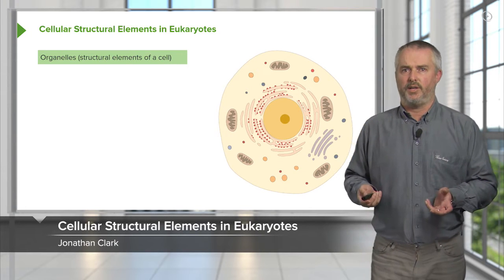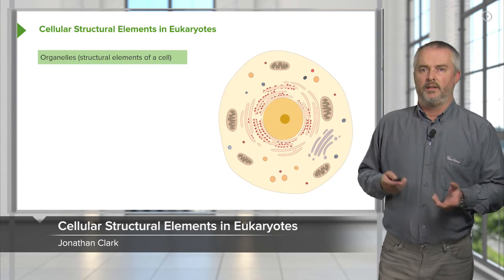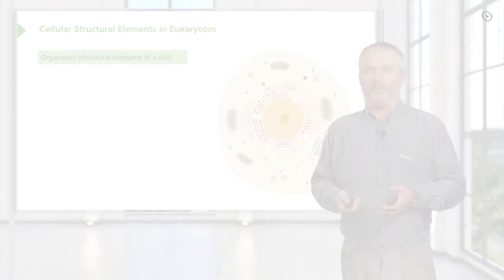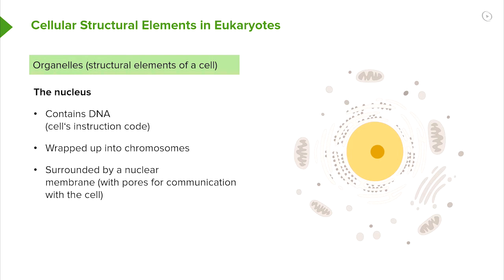So there we have an animal cell. You can see some of the organelles within it. The one in the middle, the big round orange one, is the nucleus. That's where the DNA is. You can't really see the DNA; it's all stretched out during the interphase, which is the main phase of the cell's life cycle.